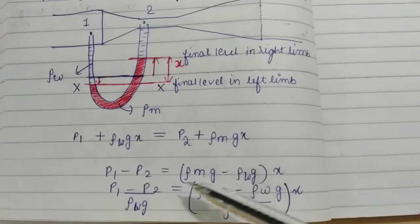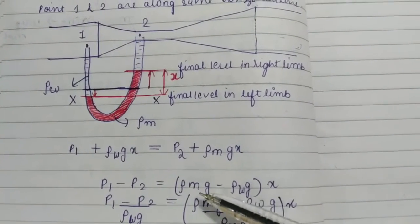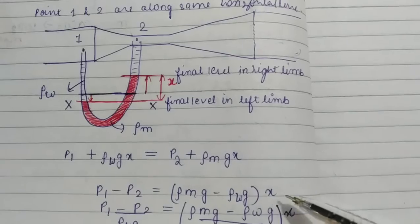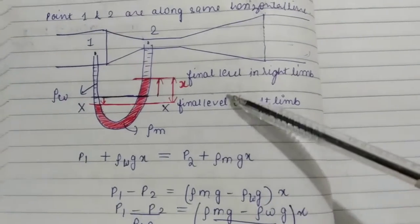And then you can just equate P1 minus P2 equals rho Mg minus rho Wg into x where x is the difference.